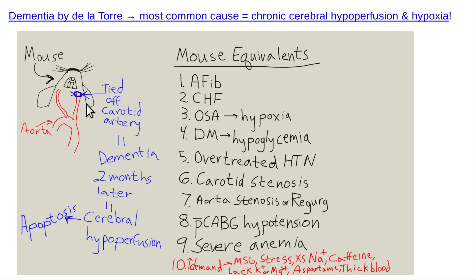I'd be more scared of low blood pressure than high blood pressure in the context of over-treating hypertension - not if your blood pressure at baseline is low and you feel good. What else causes it? Atrial fibrillation - you lose that atrial filling, that atrial kick. Chronic cerebral hypoperfusion - like the mouse. Congestive heart failure - the heart doesn't pump well. Chronic cerebral hypoperfusion, mouse equivalent.